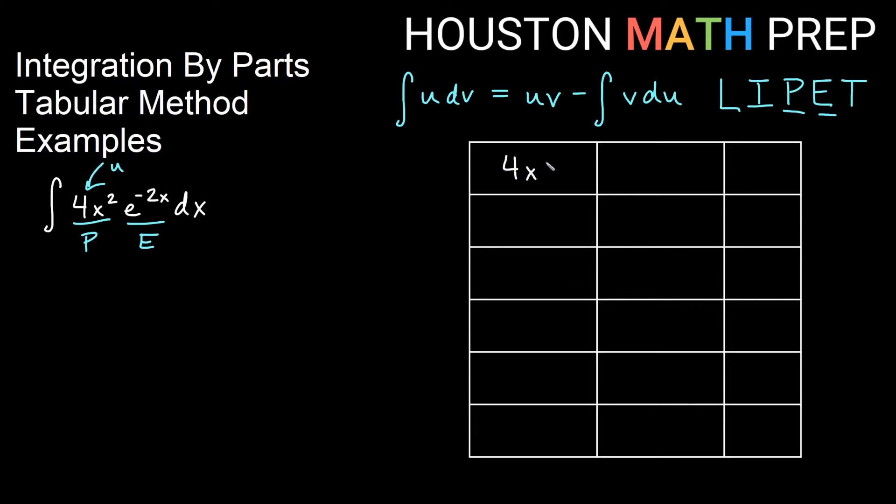So 4x², I'm going to keep the 4x as part of that. We're going to differentiate here. We will integrate in the next column our dv, which is e to the negative 2x. Our plus minus column starts with plus 1 always. Taking derivatives, we'll get 8x, then we'll get 8, and then we'll get 0.